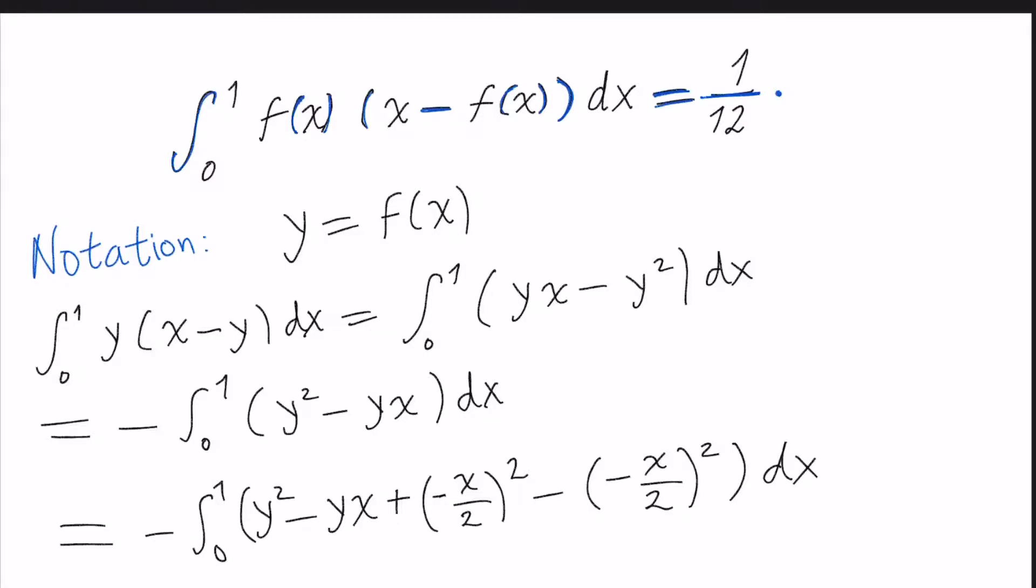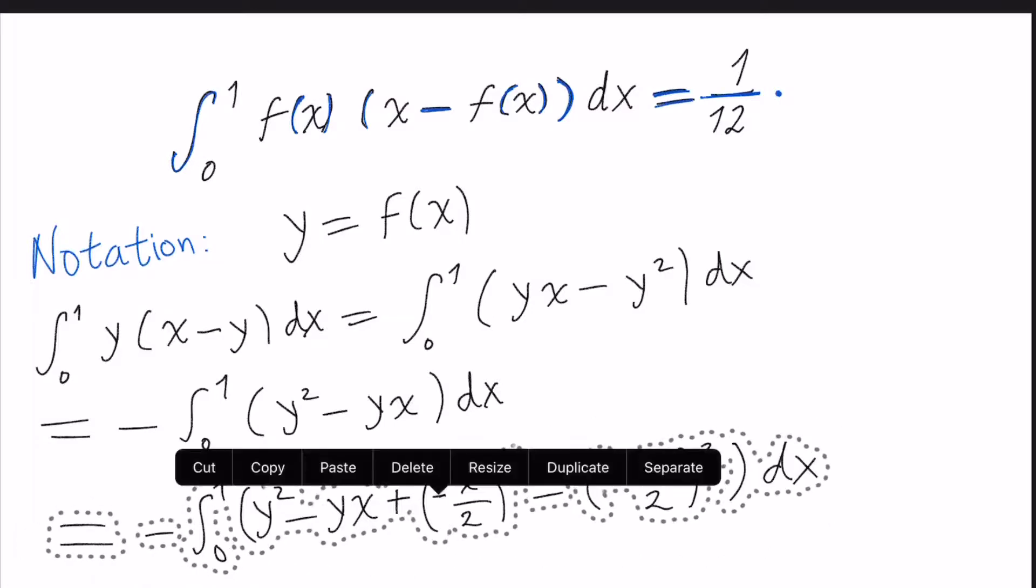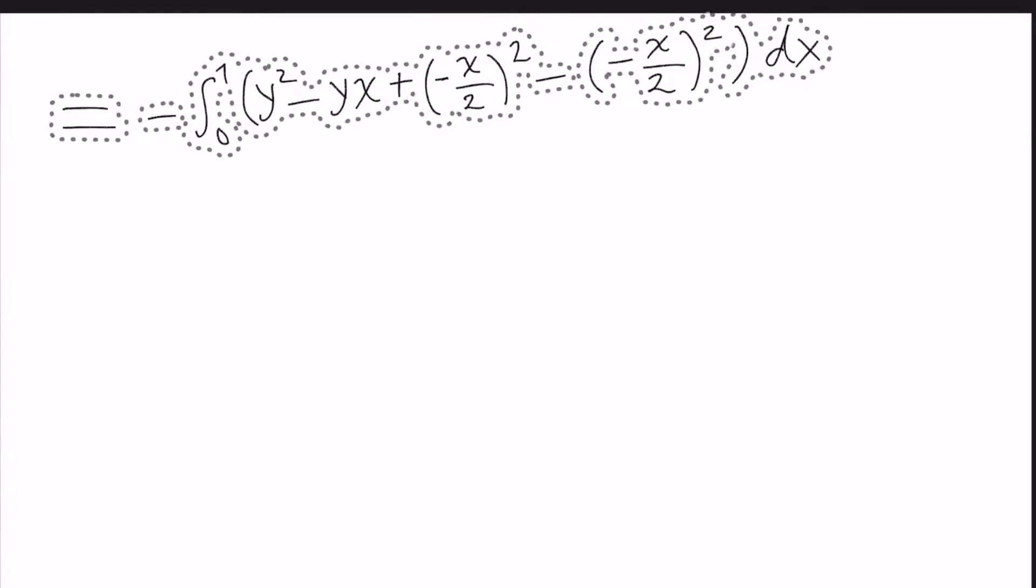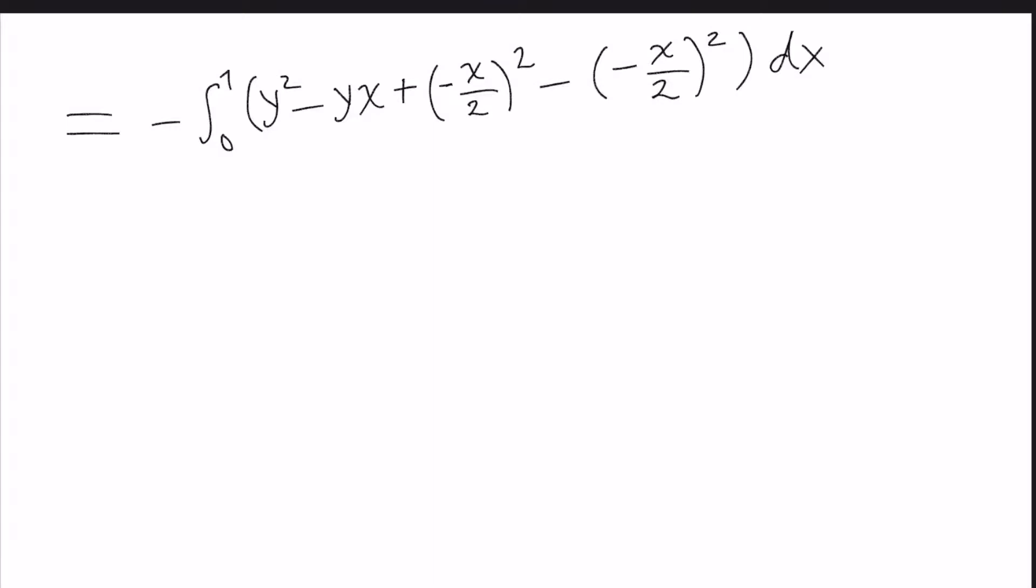So what is the next step? The next step is to make some algebra and calculate one integral that can be calculated easily. So we write equal to minus integral 0 to 1. Remember we are completing squares, so this is (y - x/2) squared minus x squared divided by 4, dx.